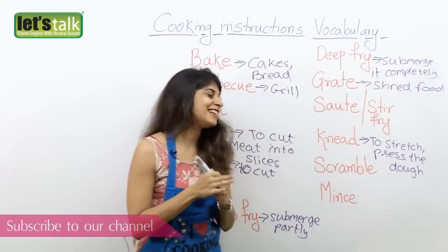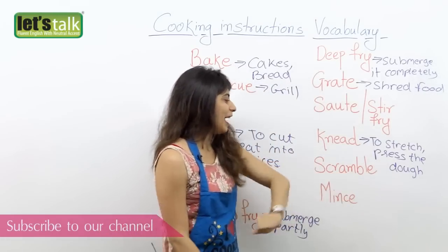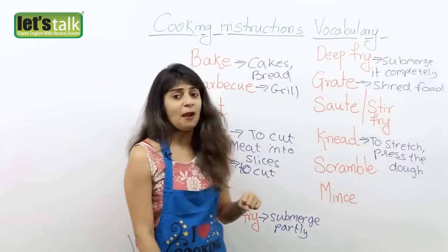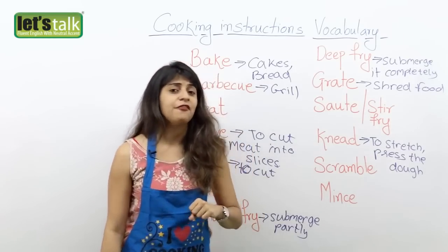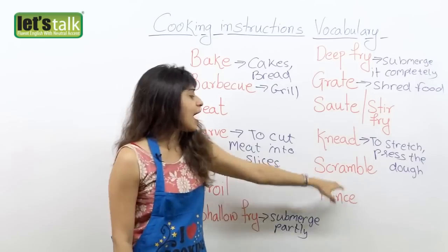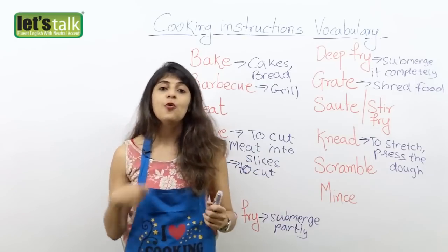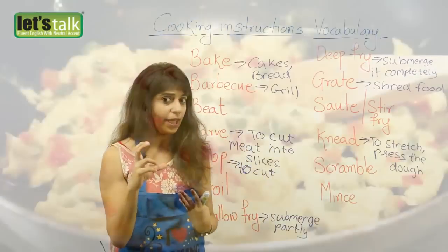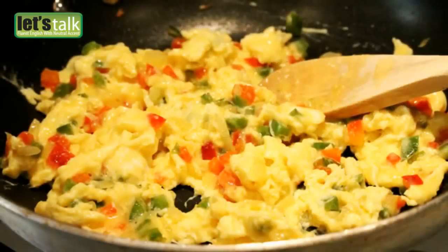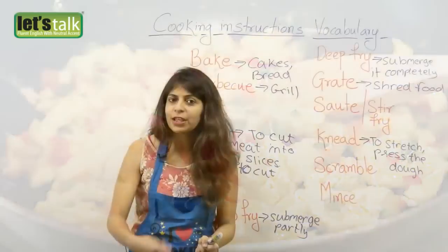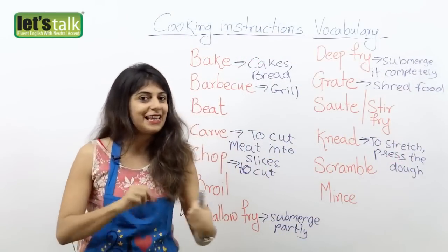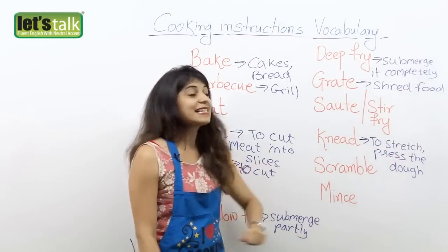And then the other one we have here is scramble. Have you tried scrambled eggs? Oh, one of my favourite breakfasts. Scramble means when you mix the whites and the yellows of an egg nicely together. So that's called scrambling — you're scrambling your eggs and then you put it on a plate and eat it with bread. So that's scramble.